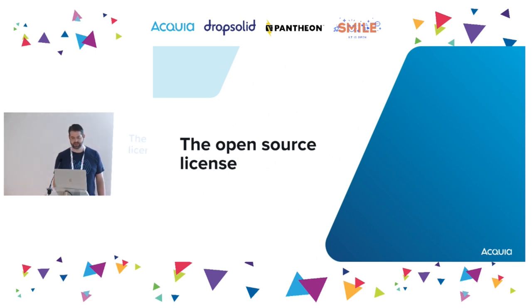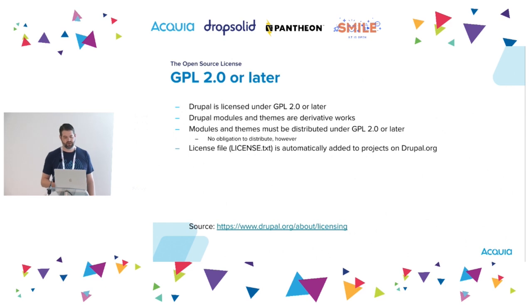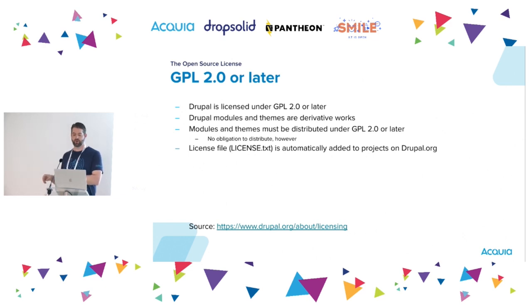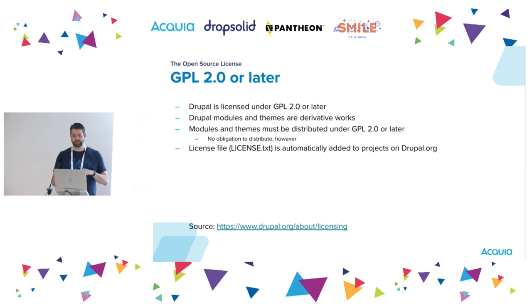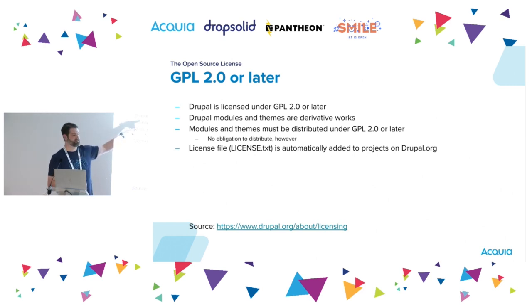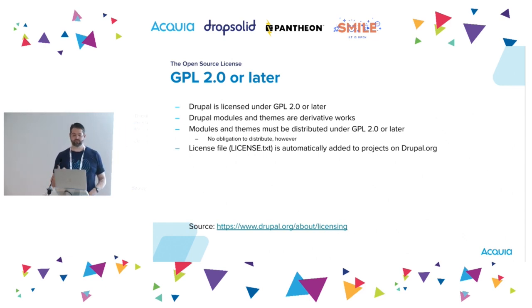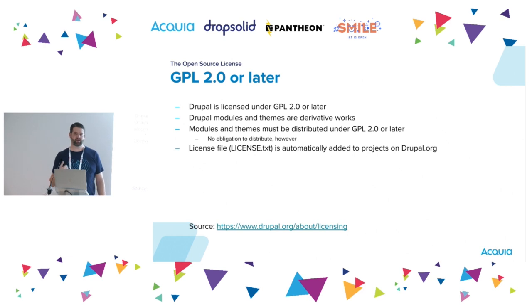We also need to talk about the open source license. Drupal is licensed under GPL 2.0 or later. Drupal modules and themes are considered derivative works, so if you choose to distribute your Drupal code, it has to be under this license. You don't have to distribute your code, but if you do, it's automatically going to be under this license. In your project, you don't need to add a license file — that automatically gets added by infrastructure when releases are packaged.